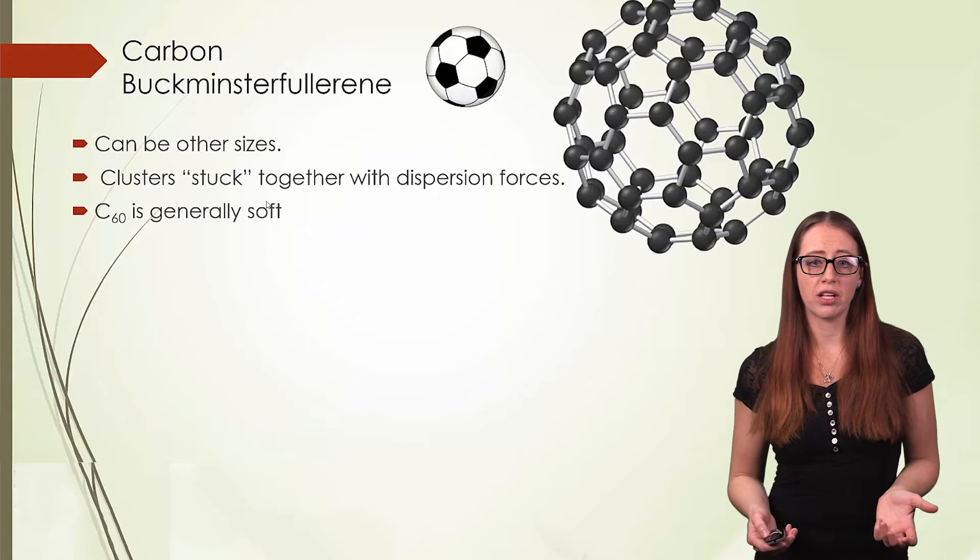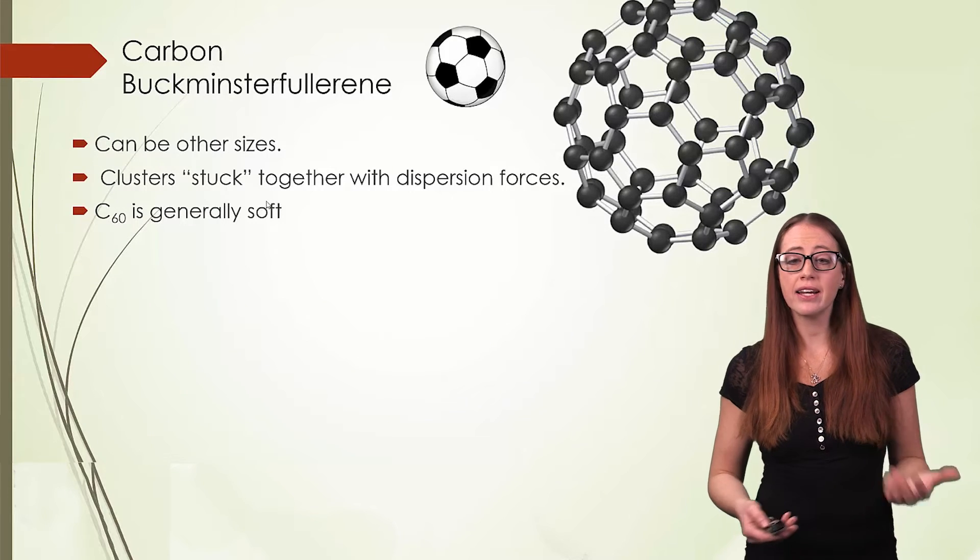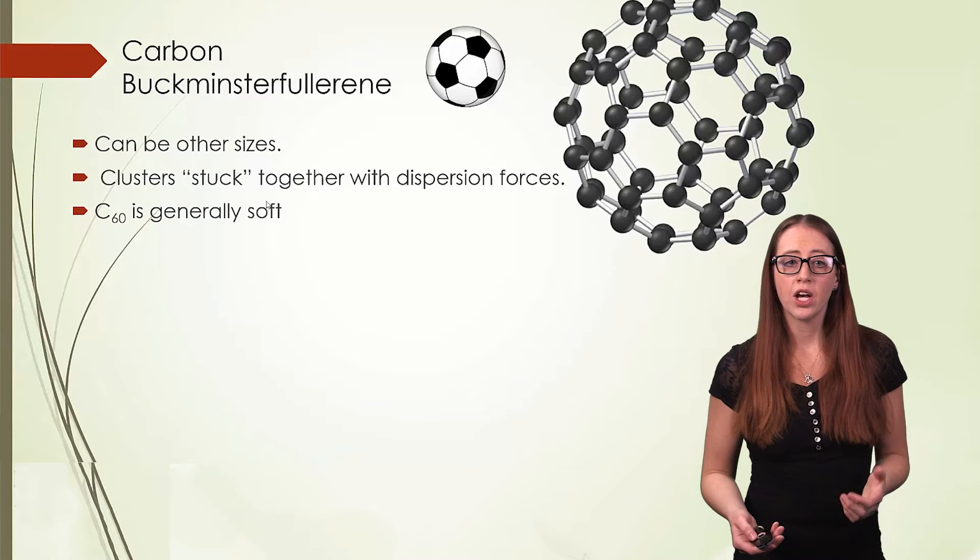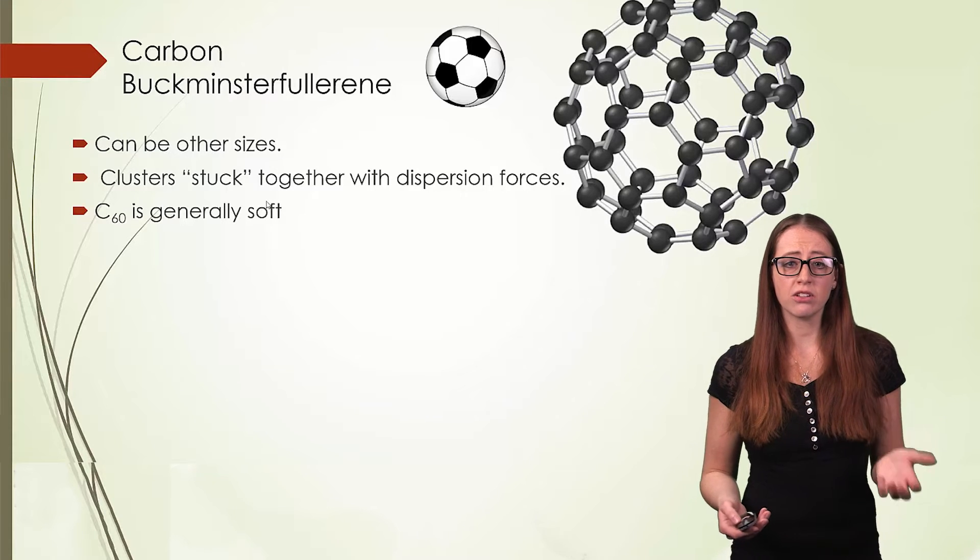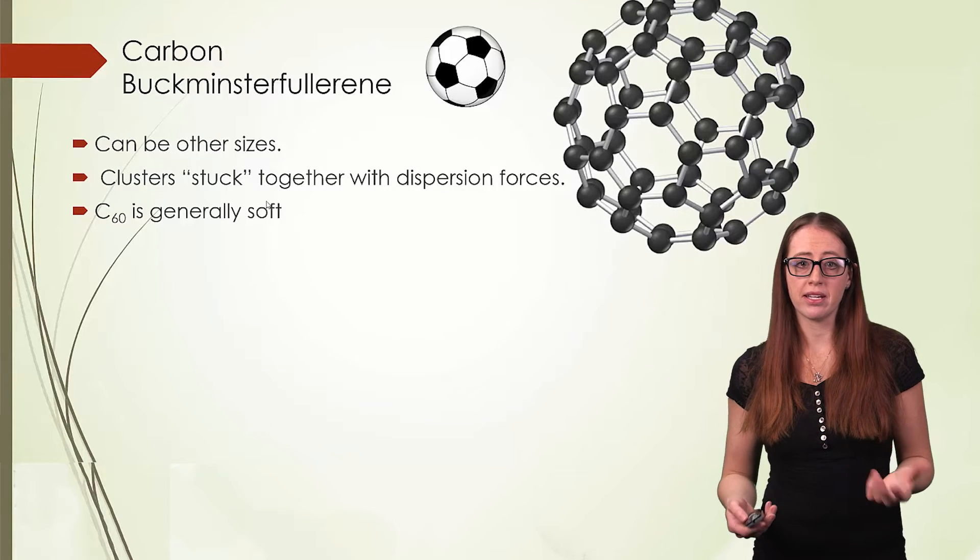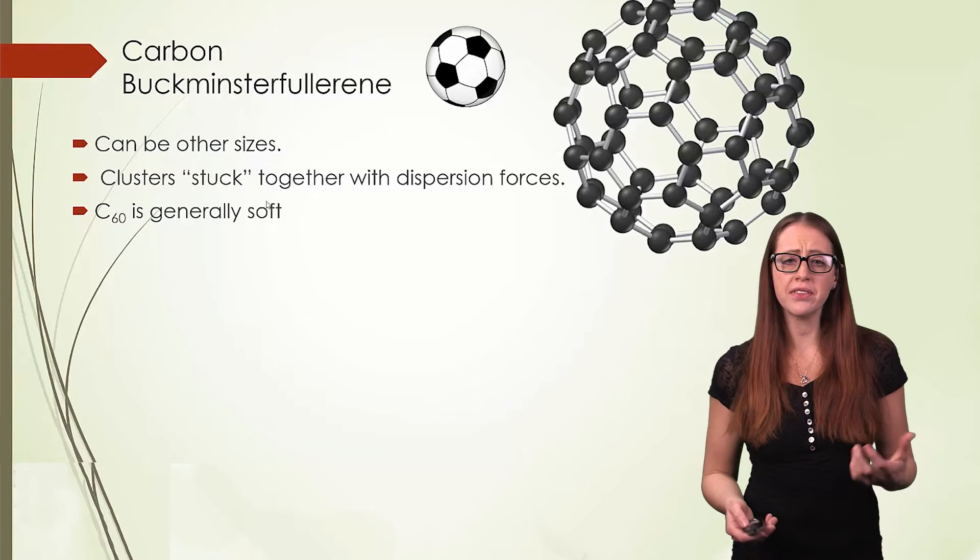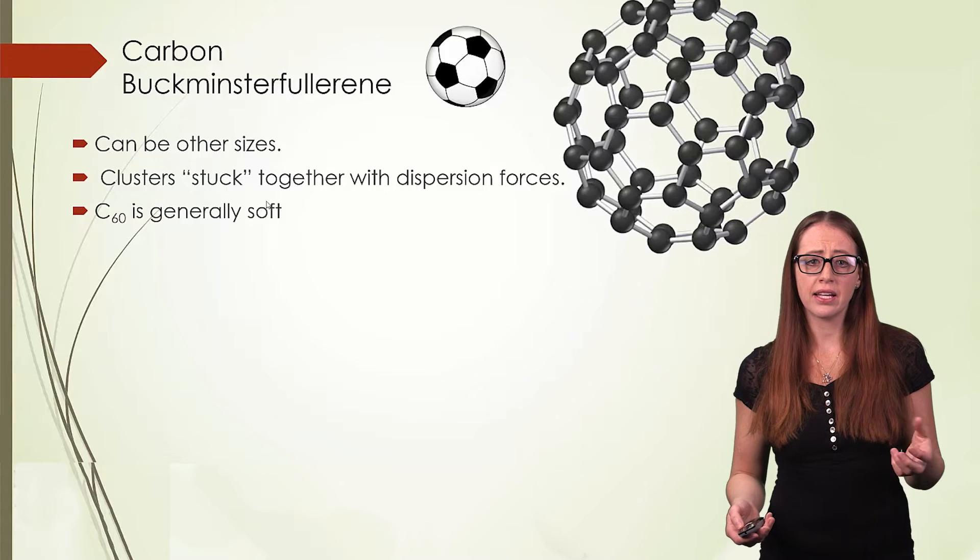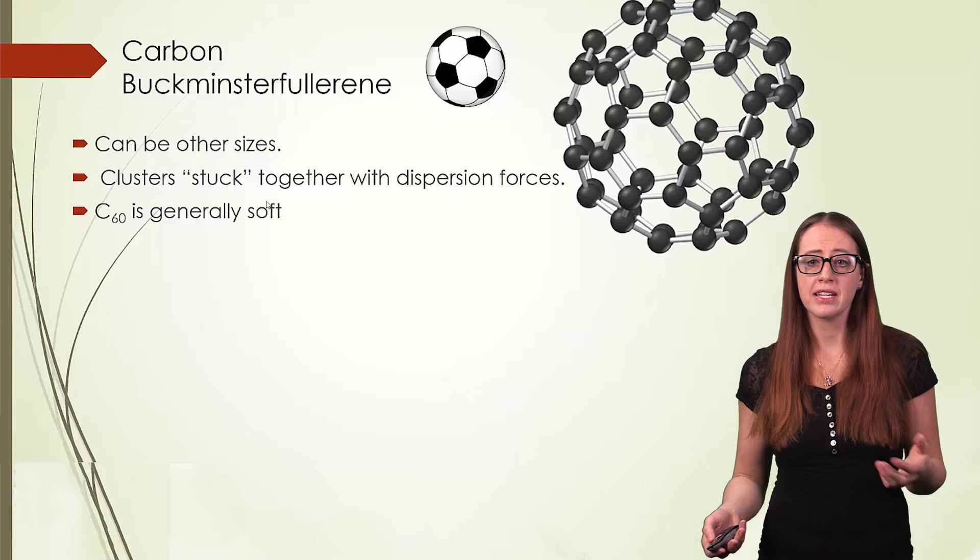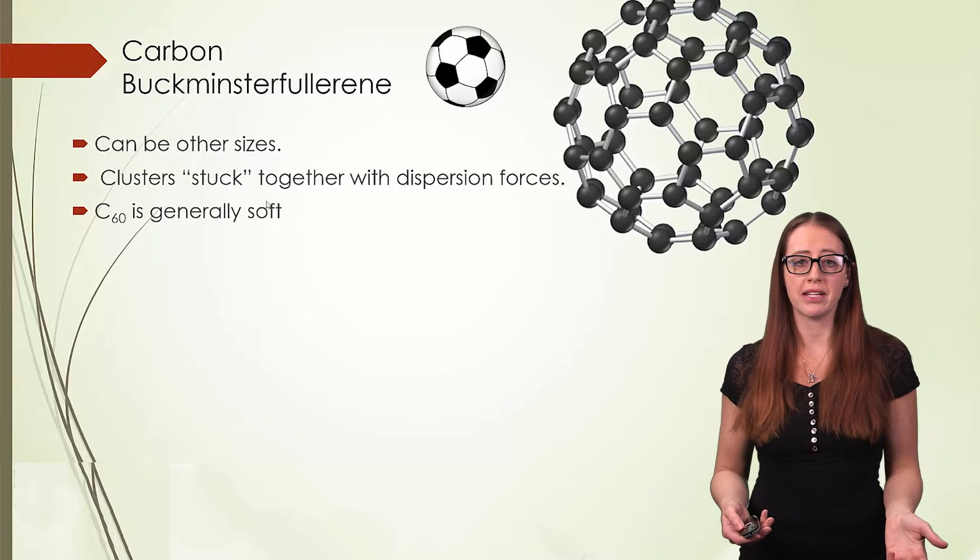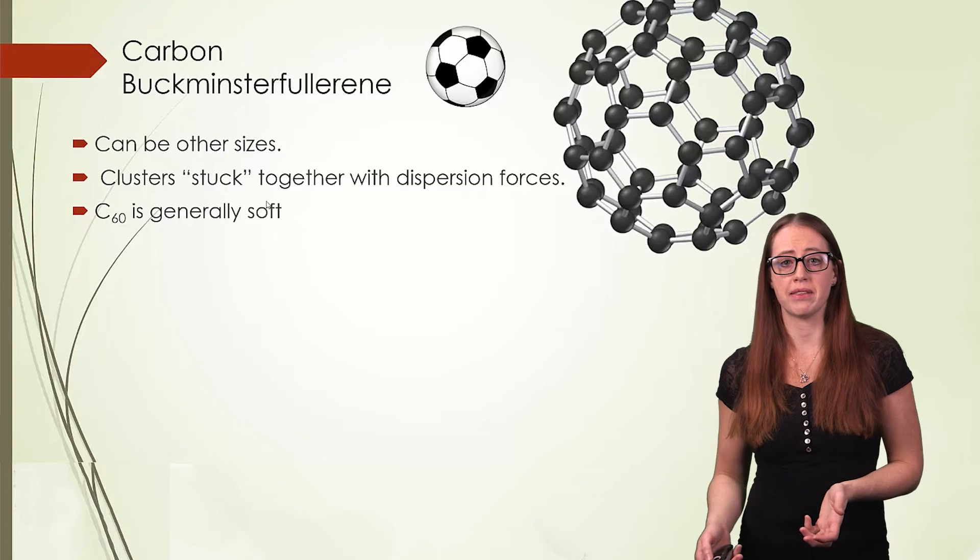Carbon can also form several other types of structures that are similar to graphite. One that you may have heard of is a buckyball, and these look like soccer balls. The shape is a soccer ball, and this is a carbon allotrope that clusters together because of very high dispersion forces, and they are naturally found in deposits of soot, but we can also make them synthetically.